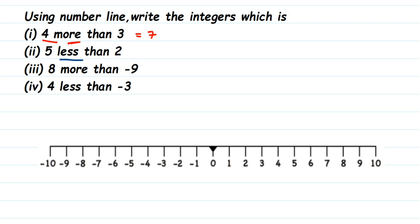The second question is five less than two. First I'm going to locate two on the number line — two is here. It's five less, so 'less' means we go to the left side, five units to the left. Counting: one, two, three, four, five — we have come to minus three. So five less than two is minus three.